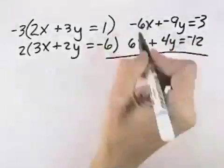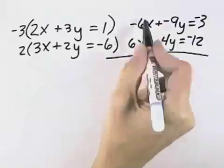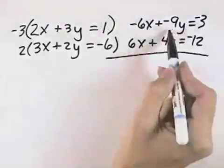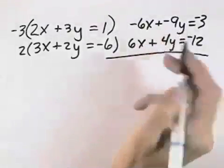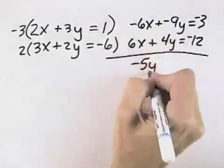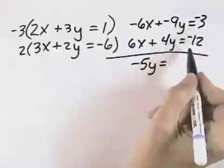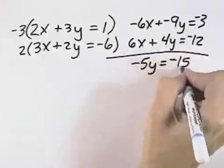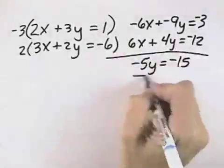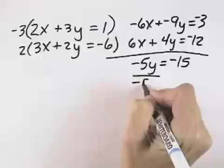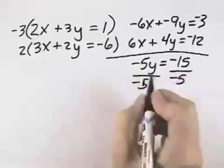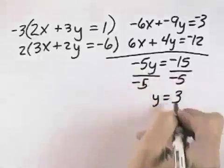Now I can add these equations, and the x's are opposite coefficients, so we can eliminate those. Negative 9y plus positive 4y is negative 5y. Negative 3 plus negative 12 is negative 15. So now I have an equation just in terms of y, and when I divide both sides by negative 5, I can see that y will equal a positive 3.